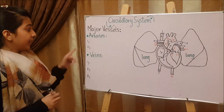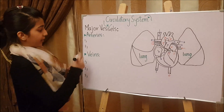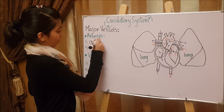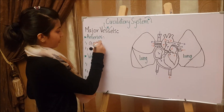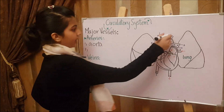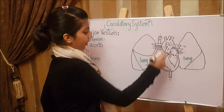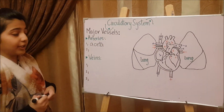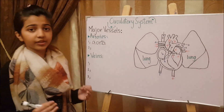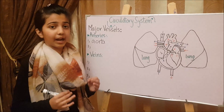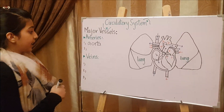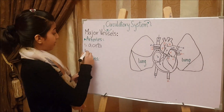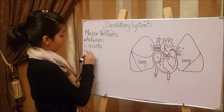Let's start with arteries. The first artery is the aorta, which is situated over here. The aorta transports oxygenated blood throughout the body from the heart. The next artery is the pulmonary artery.